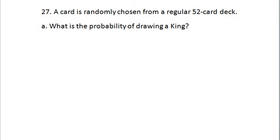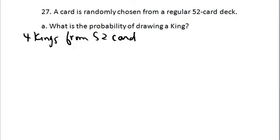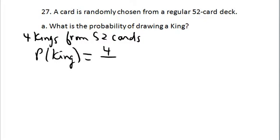A card is randomly chosen from a regular 52-card deck. What is the probability of drawing a king? This is fairly straightforward — you just have to remember your counts. There are four kings in a regular deck, out of the 52 total cards. So the probability of drawing a king, if the deck is well shuffled and all cards are equally likely, would simply be four out of 52.